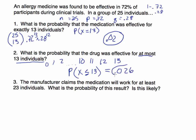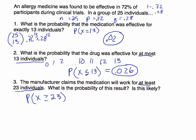So P(X ≤ 13) = 0.026, only slightly higher than exactly 13. The probability of being effective for 13 or fewer individuals was very, very small compared to having it be exactly 13. Now for the next part: the manufacturer claims the medication will work for at least 23 individuals. We want to find the probability of this result. We still use N = 25, P = 0.72, Q = 0.28. We're looking for P(X ≥ 23).